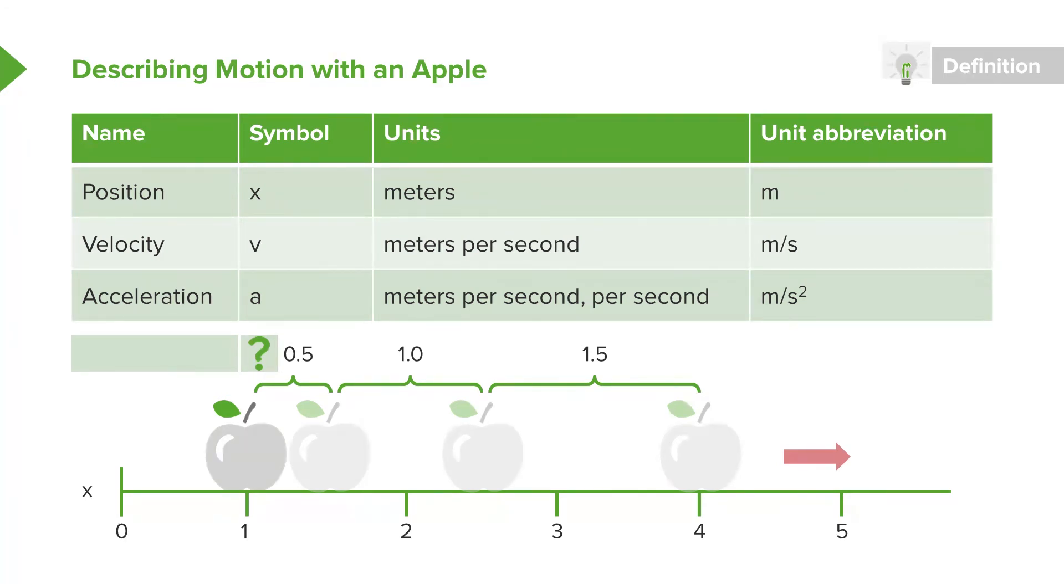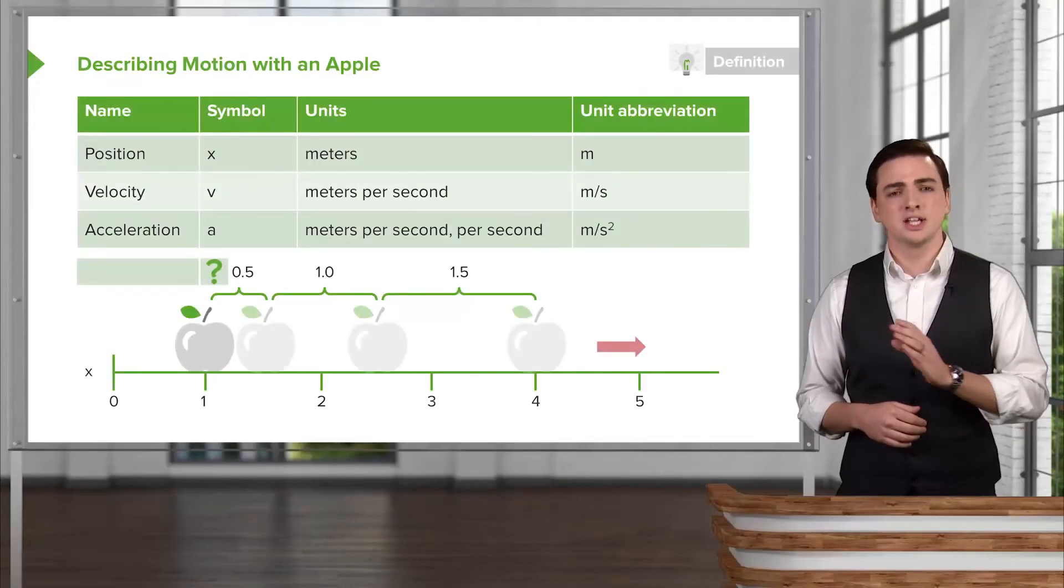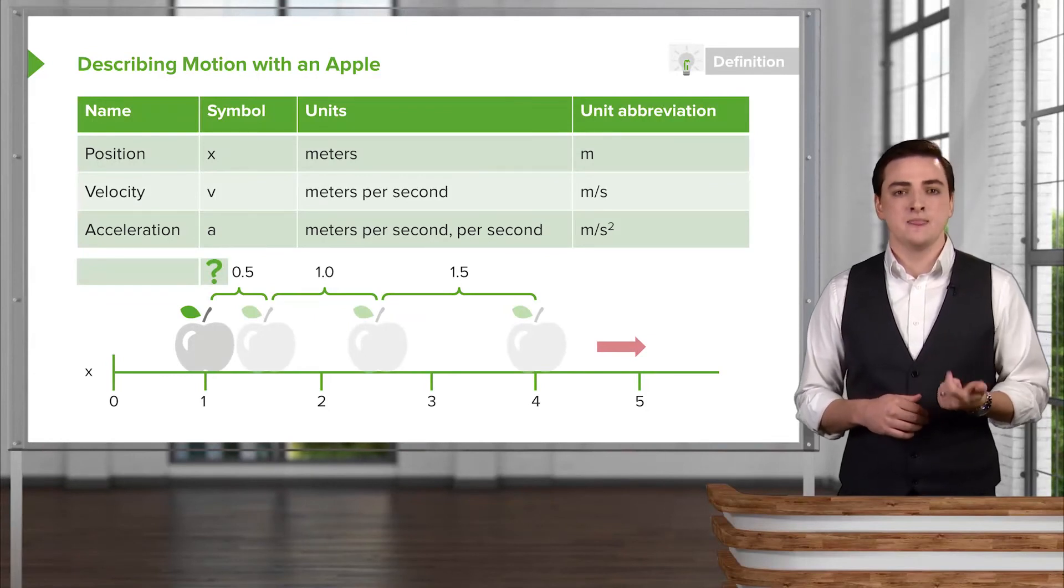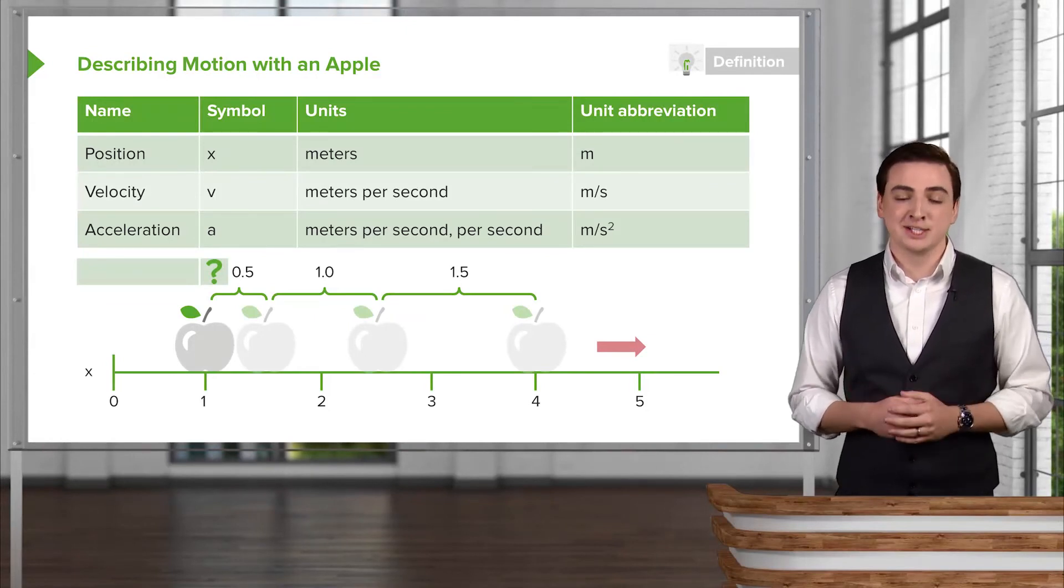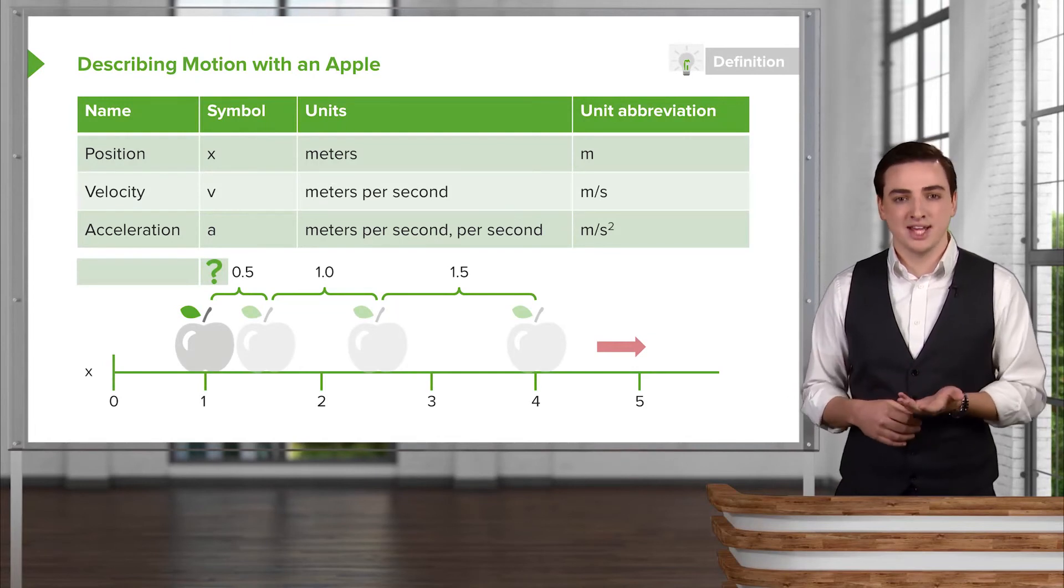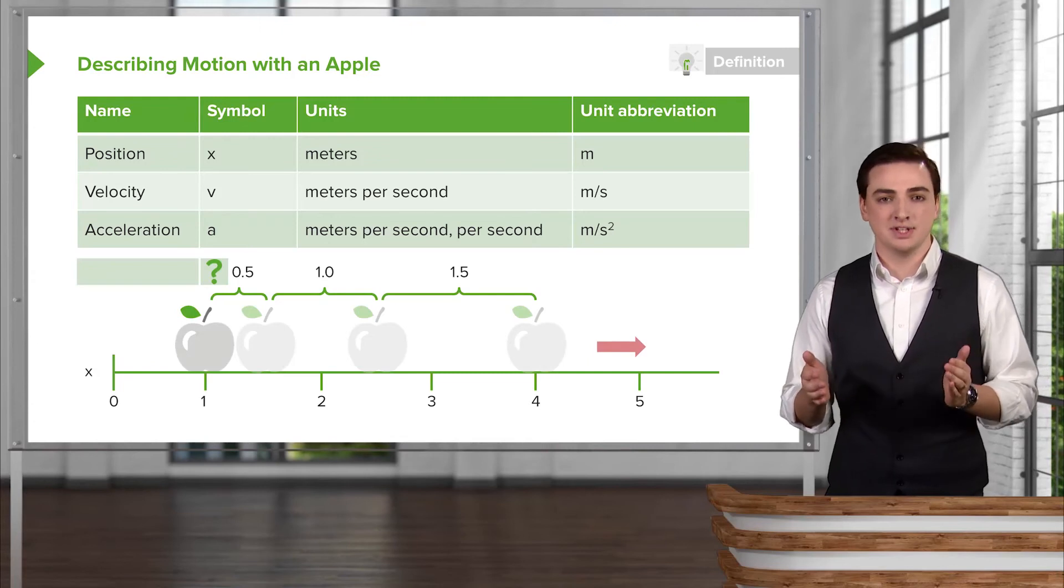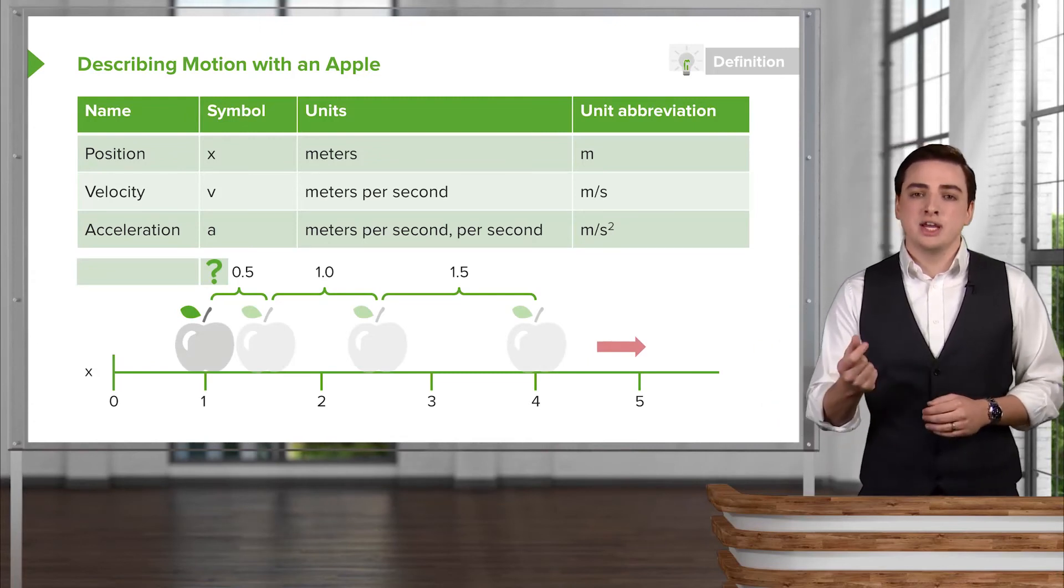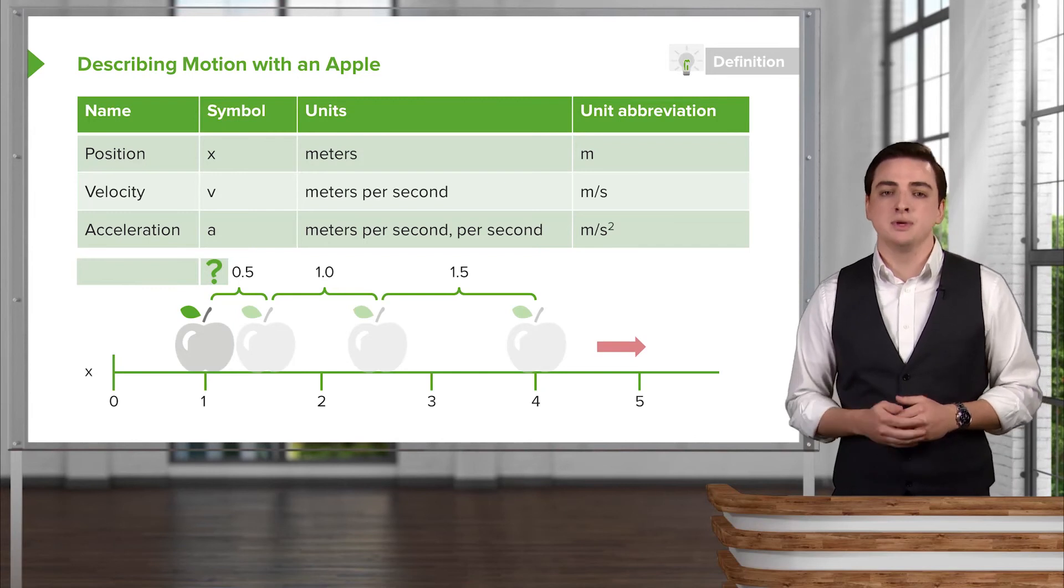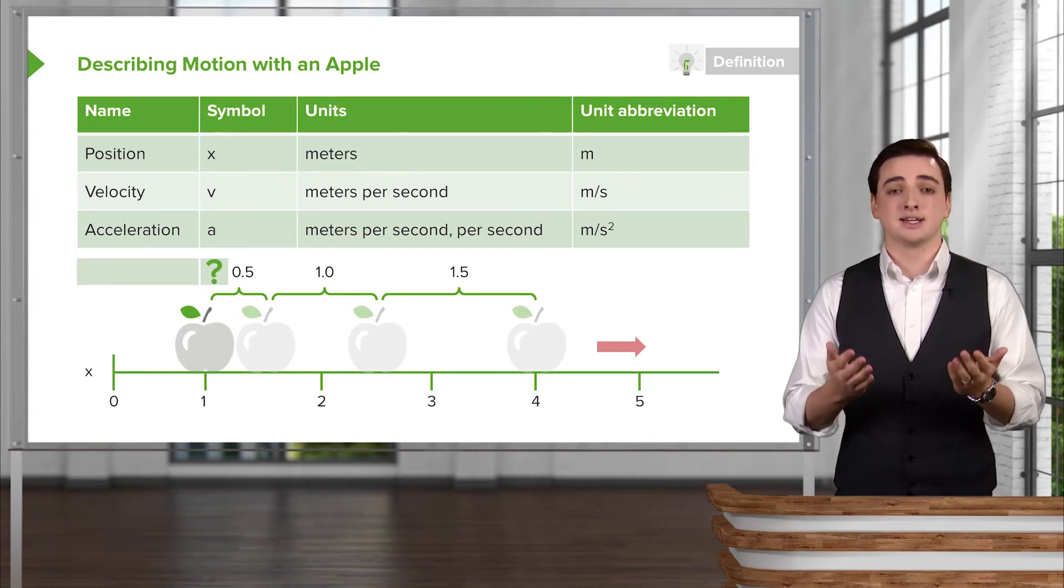The acceleration of this object we call a. The units, sort of as you would expect following the trend, are meters per second per second. In other words, how many meters per second is this object changing its velocity every second? And so the units abbreviated are meters per second squared, because those two units of seconds will come together and just say seconds squared.